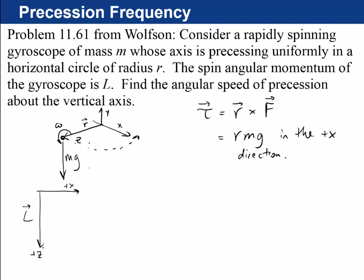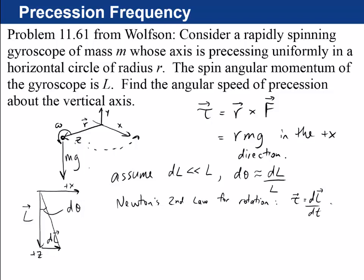So how much will that change l? It'll change it by d theta, let's call it. So if l is large, that means this dl is much smaller, so we can use the small angle approximation, d theta is equal to dl divided by l. So now we use Newton's second law for rotation, which is that dl by dt equals tau. Now that was equal to r mg. So dl is going to be equal to r mg times dt.